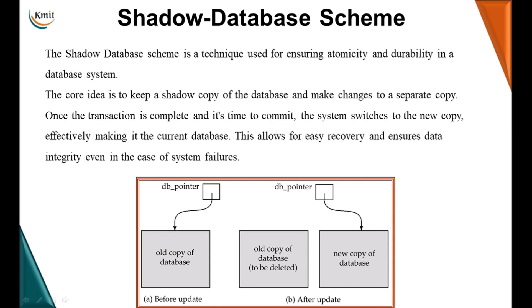Once the transaction is complete and it's time to commit, the system switches to the new copy, effectively making it the current database. Initially there is a copy of the database where the db pointer is pointing. We make a new copy, all changes are made to this copy, and at commit time the db pointer is updated to point to the new copy. This allows for easy recovery and ensures data integrity even in case of system failures.